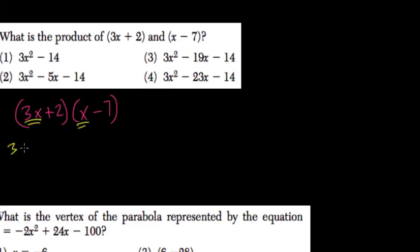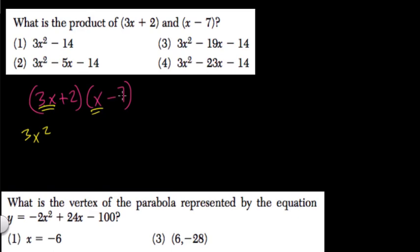3x times x, that's 3x squared. 3x times negative 7, that's negative 21x. 2 times x is 2x. And 2 times negative 7 is negative 14.